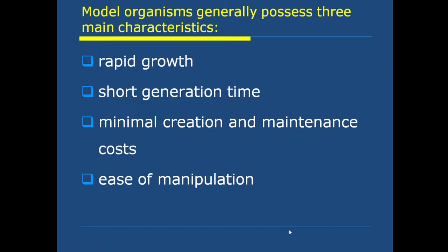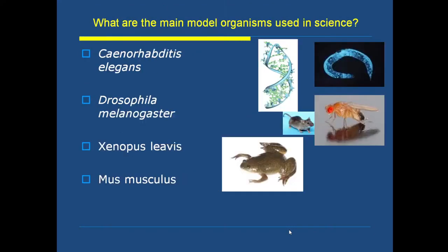Model organisms generally possess three main characteristics: rapid growth, short generation time, minimal creation and maintenance costs, and ease of manipulation. As usual, we use model organisms in investigations in medicine and biology. Examples of commonly used biological model organisms include Drosophila, Mus musculus, and Caenorhabditis elegans.